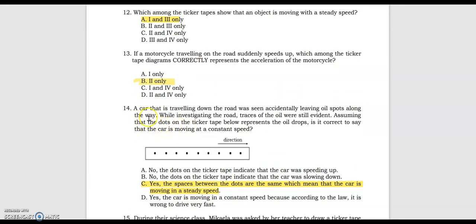Number 14, a car traveling down the road was seen accidentally leaving oil spots along the way. While investigating the road, traces of the oil were still evident. Assuming that the dots on the ticker tape represent the oil drops, is it correct to say that the car is moving at a constant speed? The answer is yes — the spaces between the dots are the same, which means the car is moving at a steady speed.